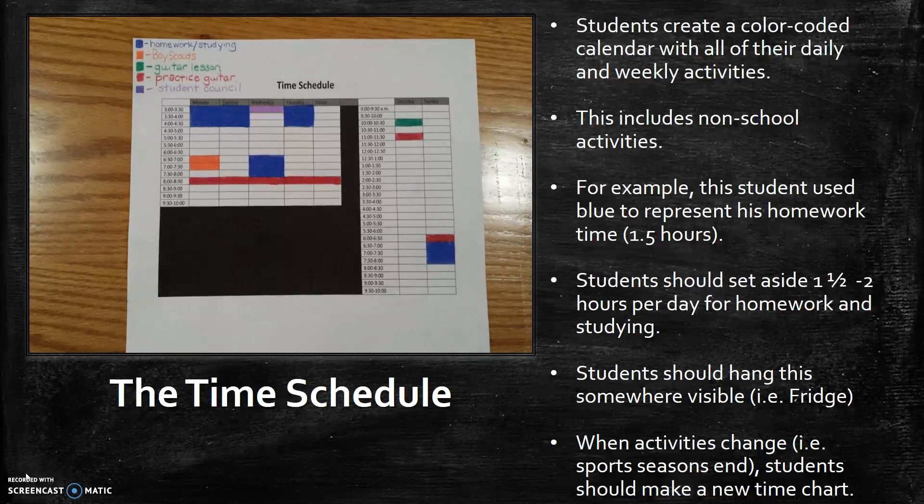So that doesn't mean you need an hour and a half Friday night, an hour and a half Saturday, an hour and a half Sunday. A total of an hour and a half. So you could spread that out 30-30-30 or you can do it all in one night like he did on Sunday night starting at 6:30. That is totally up to students and how they wanted to do that.